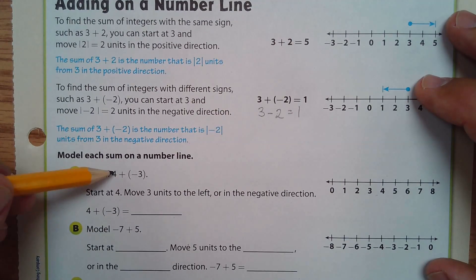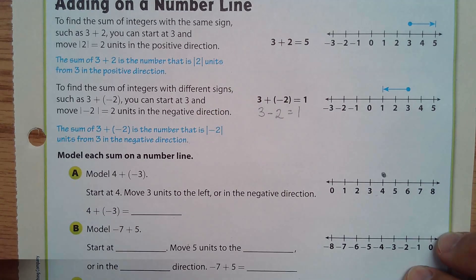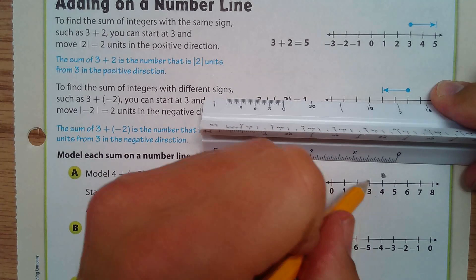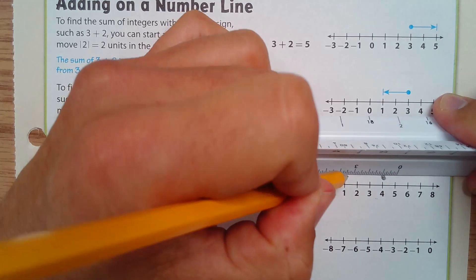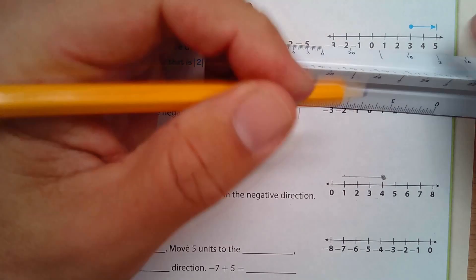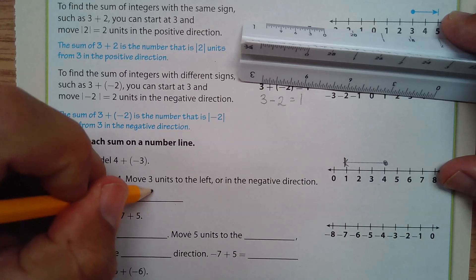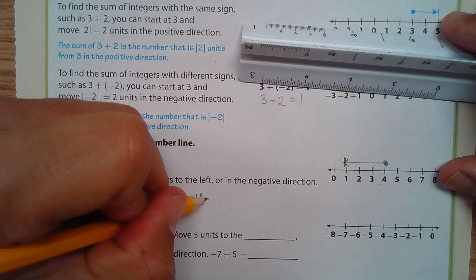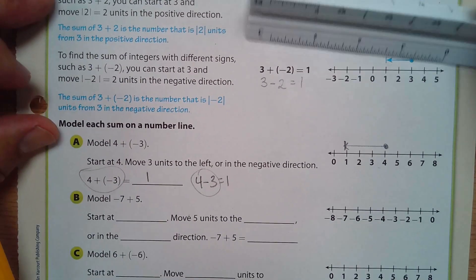We're going to model four plus negative three. You start at four. I'm going to use my ruler because I like to make straight lines, and I'm going to move three units to the left — one, two, three — and arrive right there. Three units to the left, and I arrive at one. By the way, that's the same thing as four minus three, which is also one.